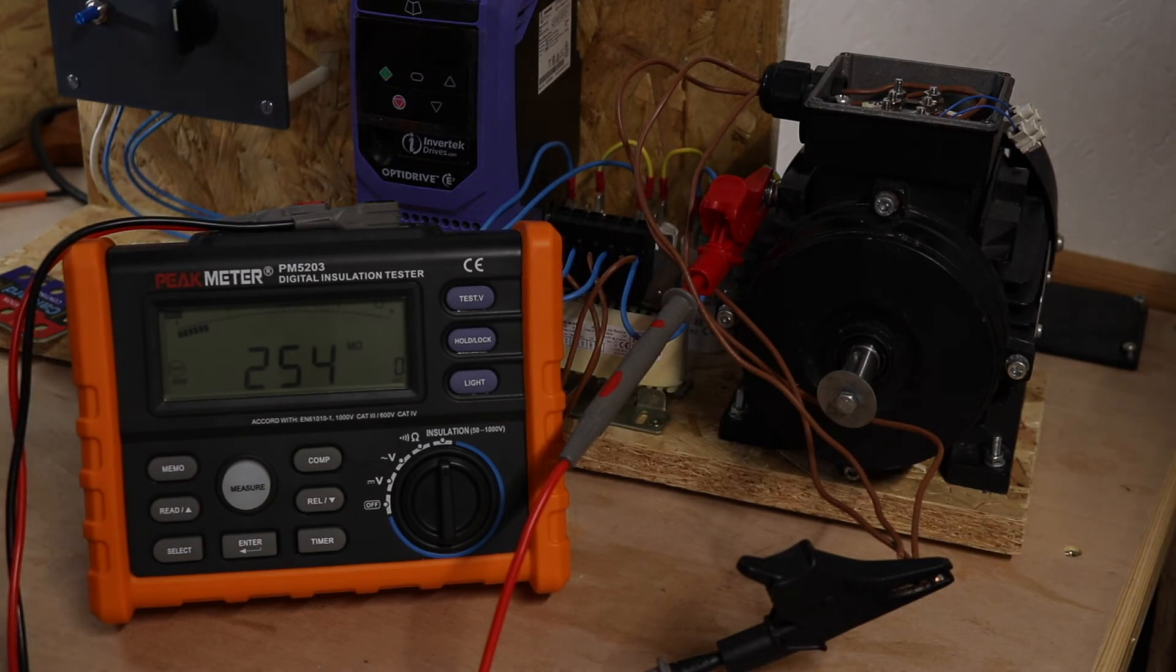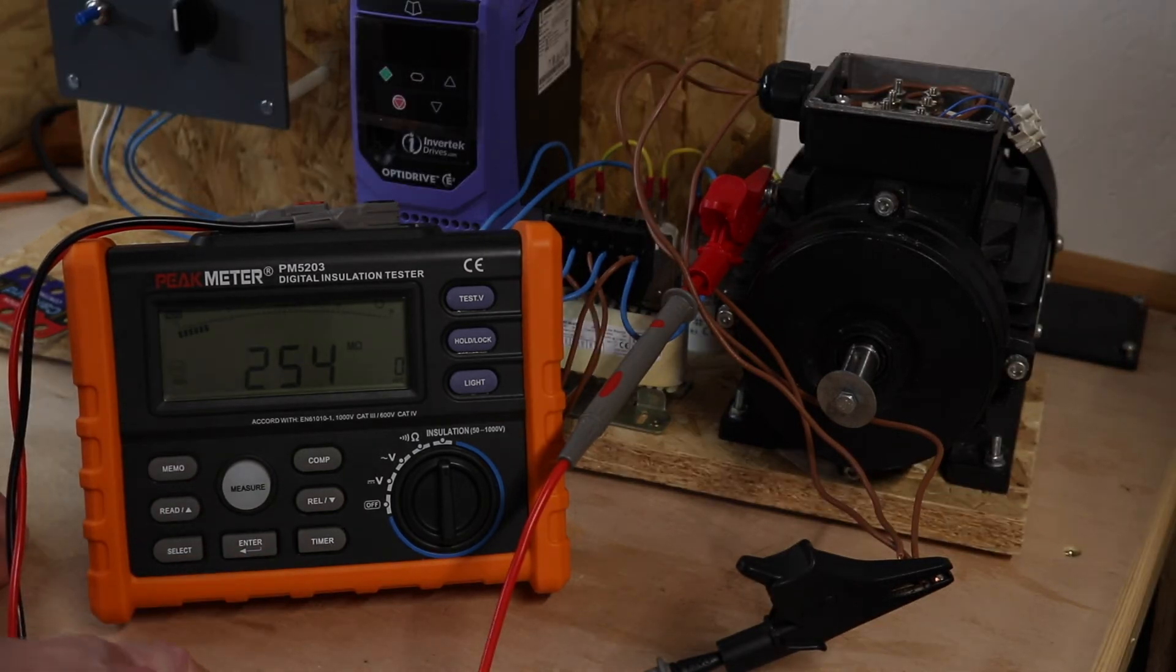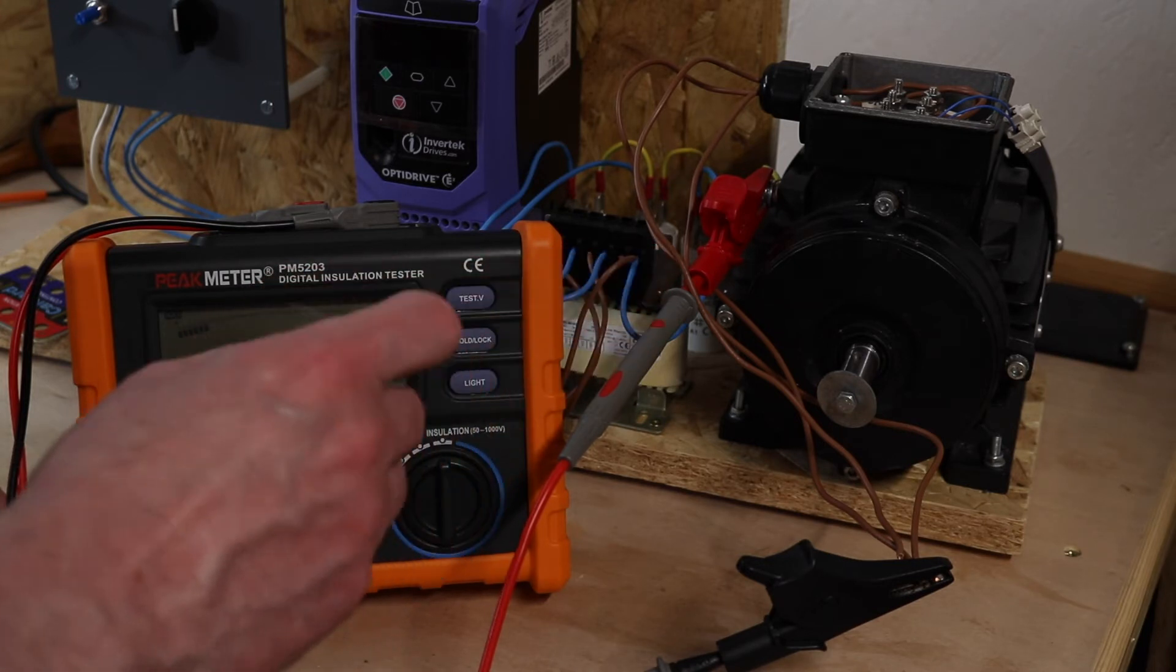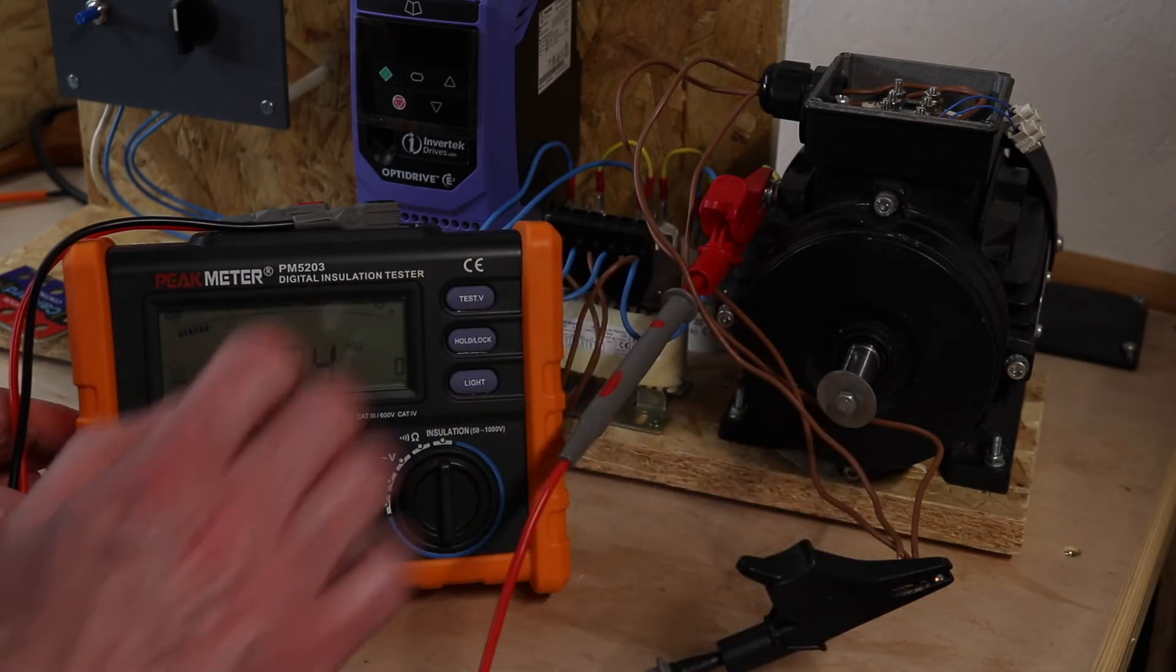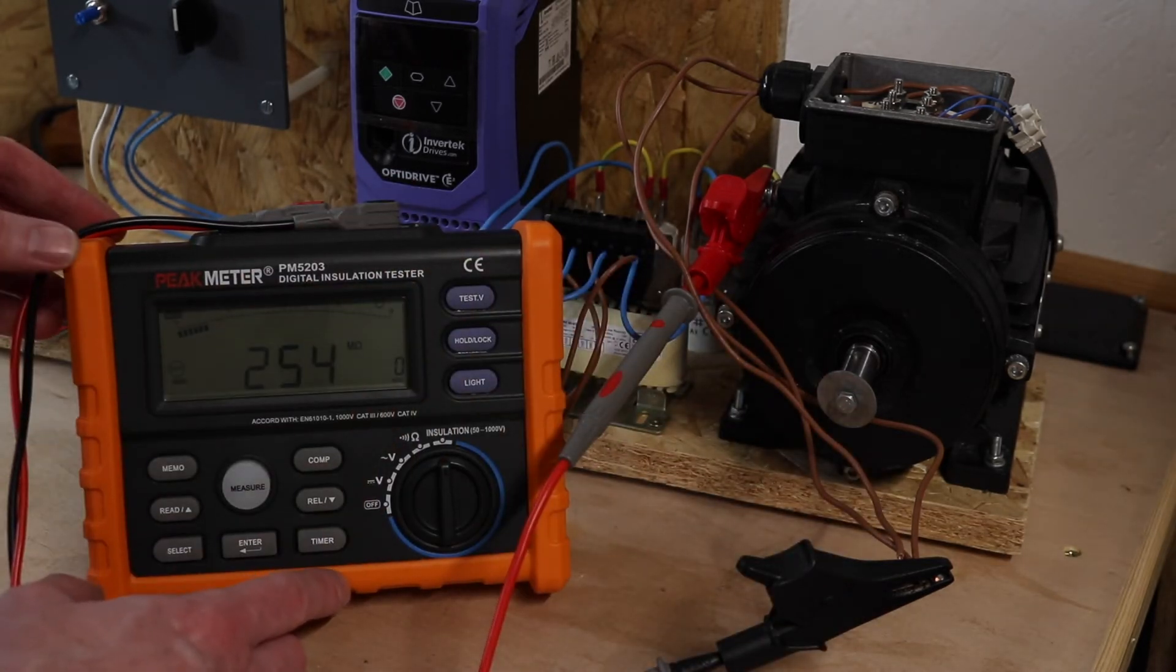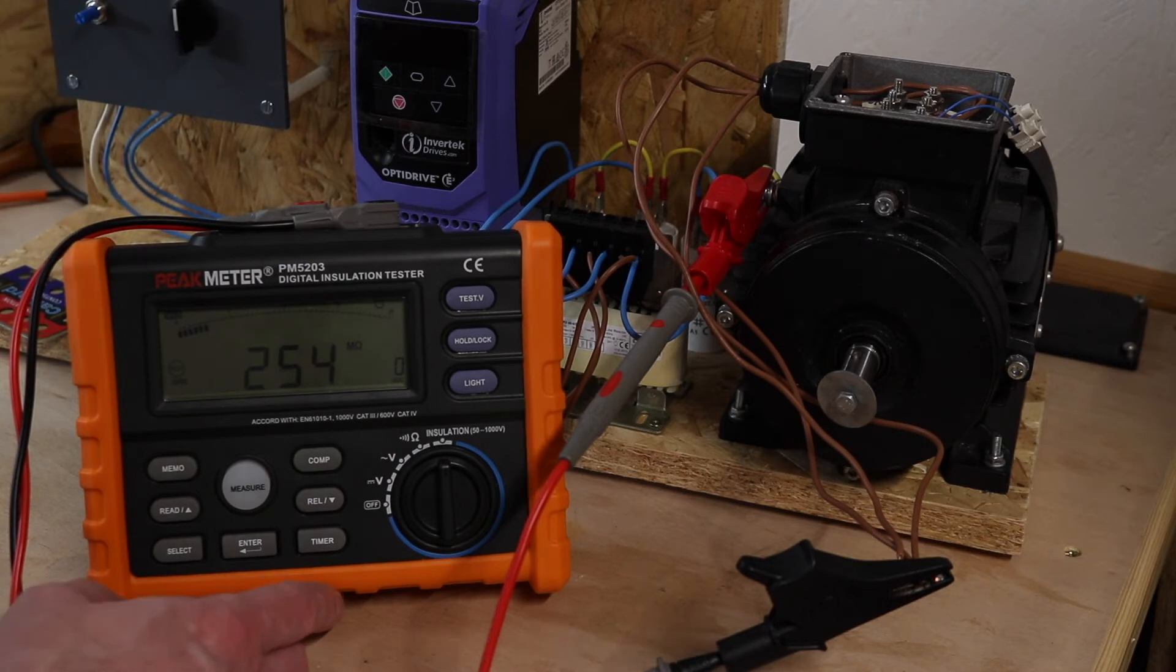53 mega ohms there. So all that's happening with the instrument that's showing over 10.10 is the insulation is better than what the meter can actually read, if you've done all the connections right as per I've done there. Unfortunately for this motor, it doesn't actually do that because the insulation isn't that good on this motor.